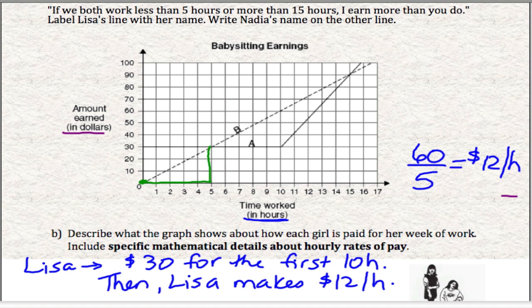If I look at my triangle there for rise over run, I know from 0 up to 30, that's a change of 30. And from 0 up to 5, that's a change of 5. So 30 divided by 5 is 6. So I know that Nadia must make $6 per hour.